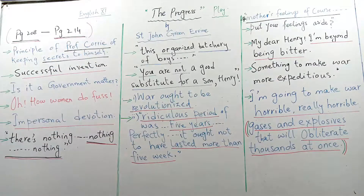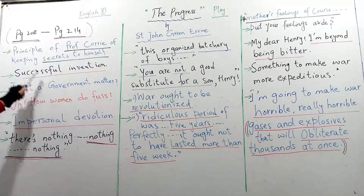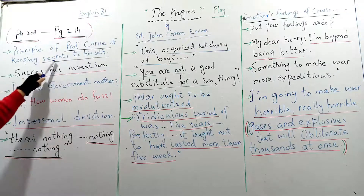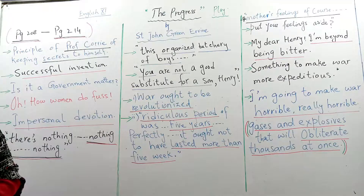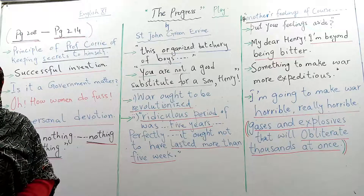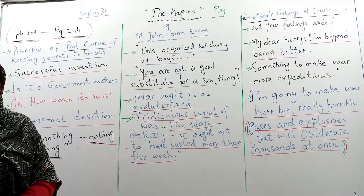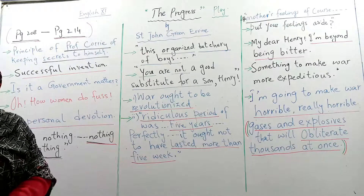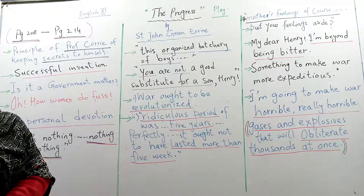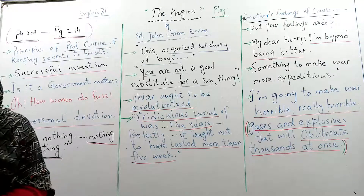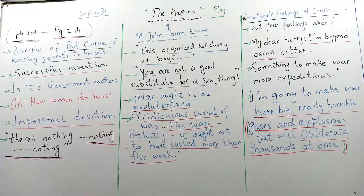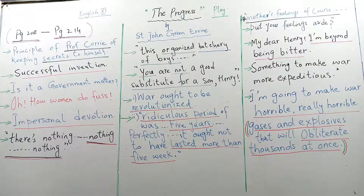Coming back to page 208: Corley's principle is 'keeping secrets to himself.' He says: 'The secret of successful invention, Charlotte, is reticence. But now I can tell you — the component parts are still my secret and will remain such until I can get a binding offer from some government.' His greed is visible here. Mrs. Meldon asks: 'Is it a government matter?' Corley confirms he will offer it first to the British government, and if they won't pay his price, he will offer it to somebody else.